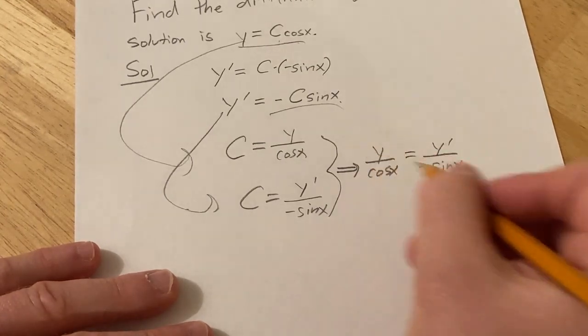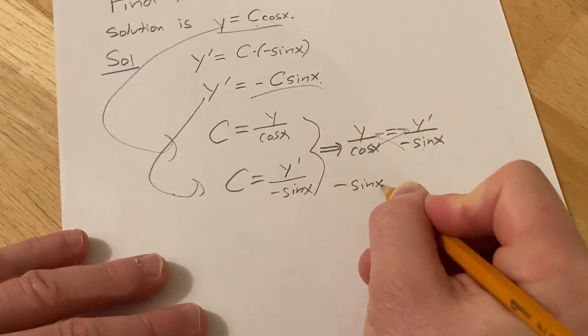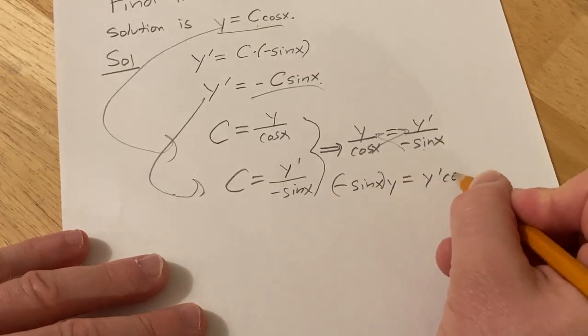And we can cross multiply now. So we have negative sine x times y equals y prime times cosine x.